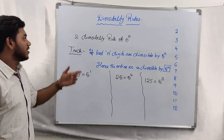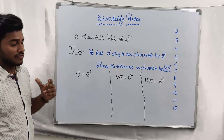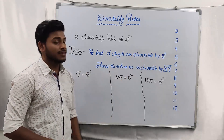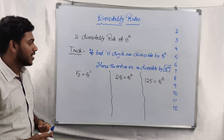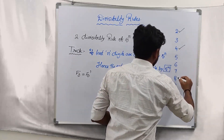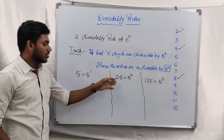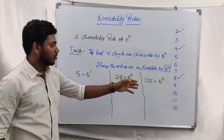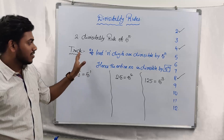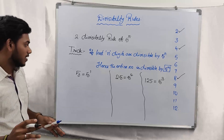Okay, here is the second one — the divisibility rule of 5^n. That is also similar to the previous one. If the last n digits are divisible by 5^n, hence the entire number is also divisible by 5^n. 5 can be written as 5^1, 25 as 5^2, 125 as 5^3, and 625 as 5^4. This rule is also applicable for 5^5, 5^6, and so on.